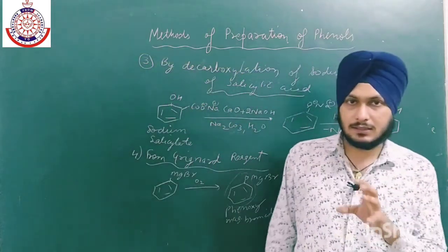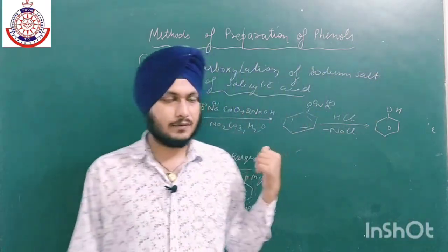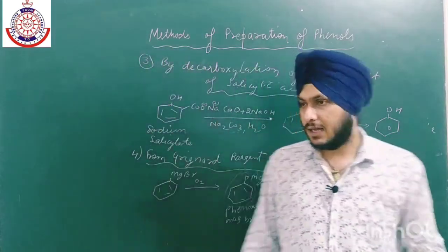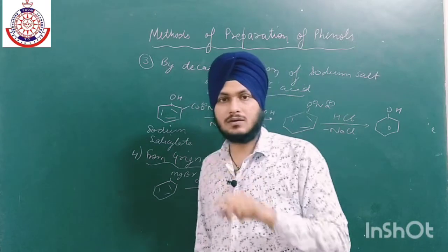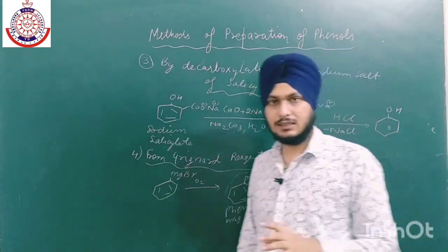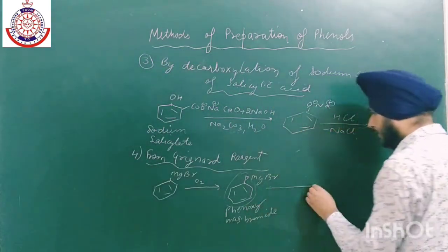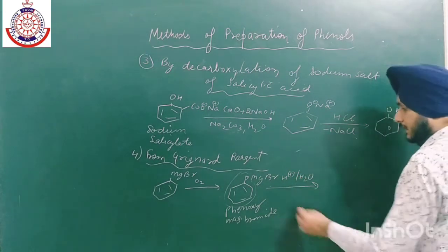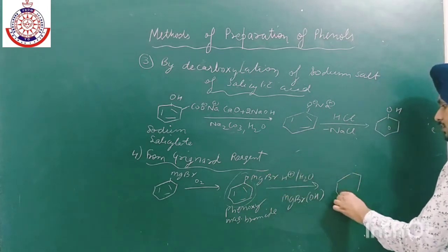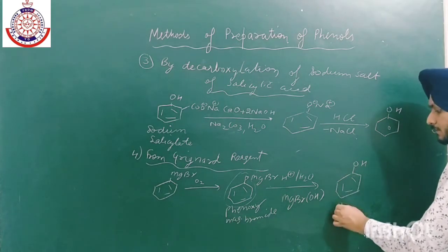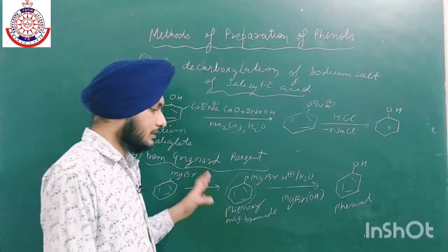As in almost all Grignard reactions, the second step is hydrolysis. The R group attacks the carbon, the double bond shifts to oxygen, MgBr attaches to oxygen, and then hydrolysis is performed. In the presence of any acid, MgBr and OH leave, a hydrogen attaches, and we get phenol as the product.